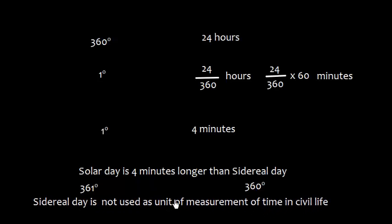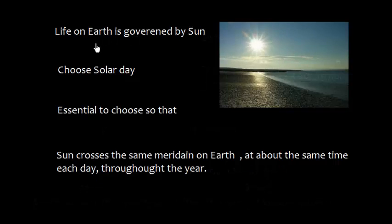However, this sidereal day is not used as unit of measurement of time in daily life because we depend on Sun. The life on earth is governed by Sun, so we choose a solar day, and this is essential to choose so that Sun crosses the same meridian on earth at about the same time each day throughout the year.